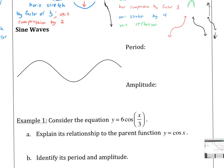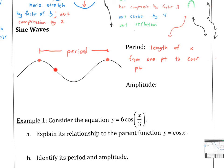So we're going to look at sine waves particularly. We've already talked about what period means, but let's briefly describe what period is. Period is from one corresponding point to another — in this case, crest to crest. We don't have to choose the crest; we could use the trough to trough, or the midpoint to its corresponding midpoint. The length of x from one point to its corresponding point.